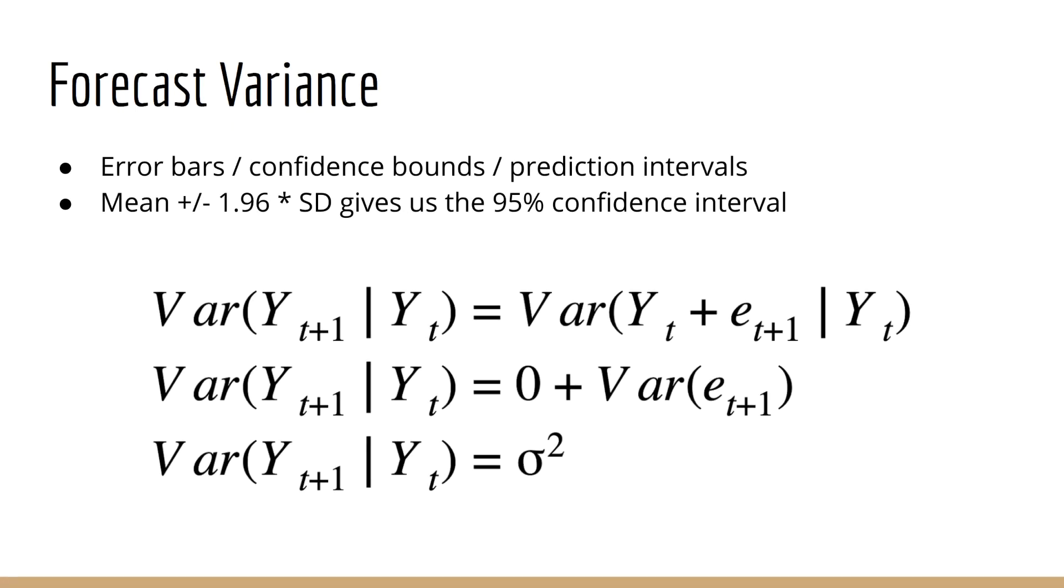On to question number two. We now know how to get the expected value of a forecast, but what about the error bars, or sometimes as we like to call them confidence bounds or prediction intervals? Using statistics, we know that if we just assume the error is Gaussian, we can find the standard deviation of each prediction, and then the standard deviation times 1.96 will give us our 95% confidence interval. But the standard deviation is just the square root of the variance, so it suffices to find the variance of each forecast.